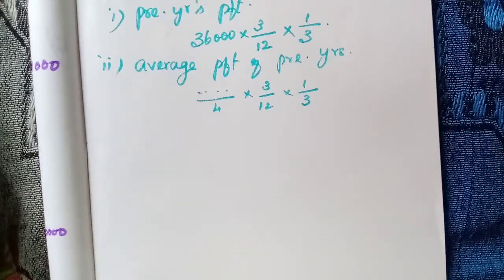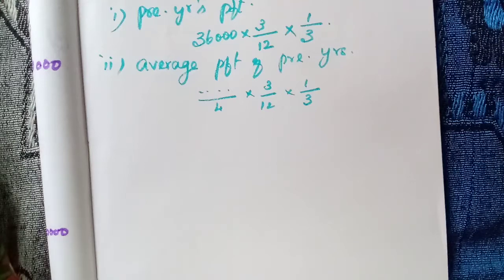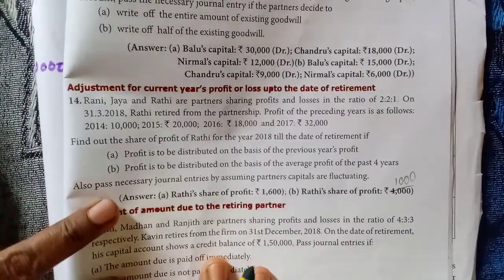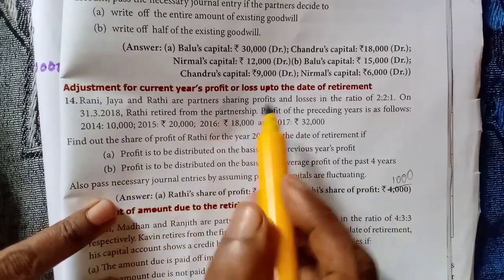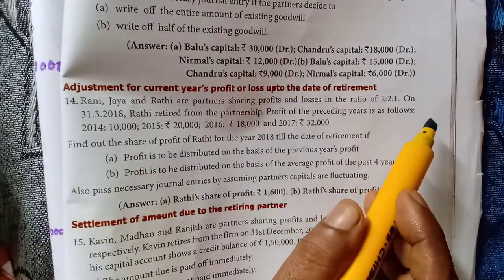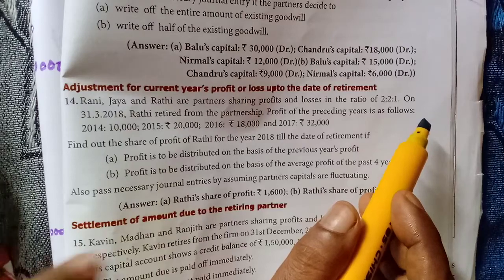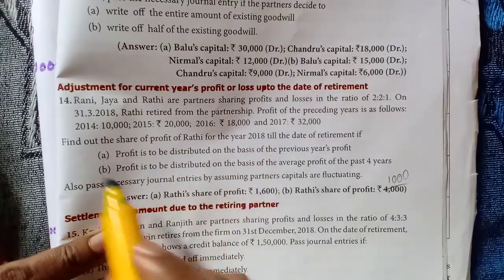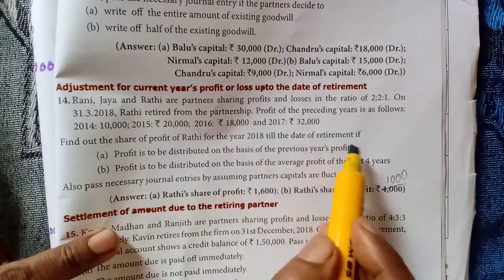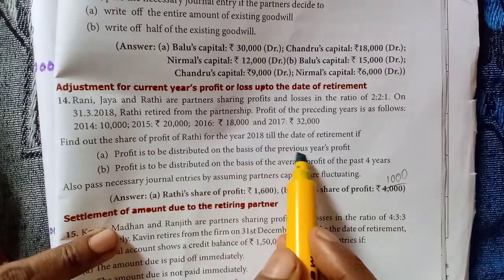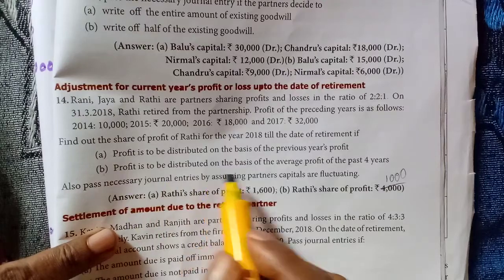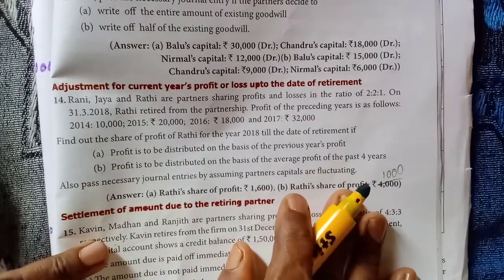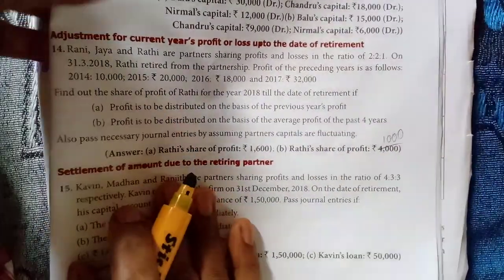Shall we do exercise 14? Please take your textbook and notebook. Rani, Jaya and Rathi are partners sharing profits and losses in the ratio of 2:2:1. On 31-3-2018, Rathi retired from the partnership firm. Profits of the preceding years 2014-15, 2015-16 and 2016-17 are given. Find out Rathi's share of profit for the year 2018 till the date of retirement — A: based on previous year's profit, B: based on average profit of the past four years.